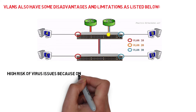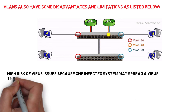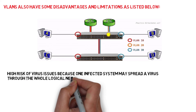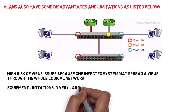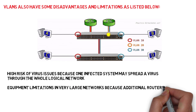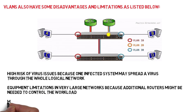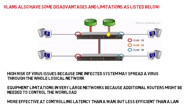VLANs also have some disadvantages and limitations. There is a high risk of virus issues because one infected system may spread a virus through the whole logical network. Equipment limitations exist in very large networks because additional routers might be needed to control the workload. VLANs are more effective at controlling latency than a WAN, but less efficient than a LAN.